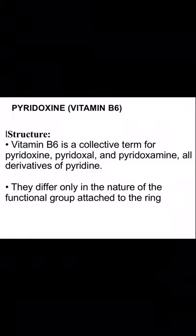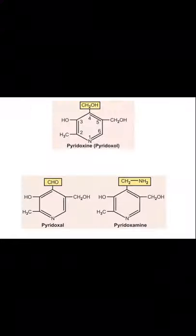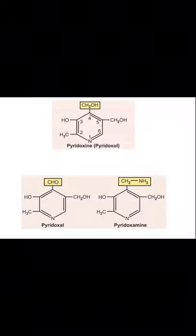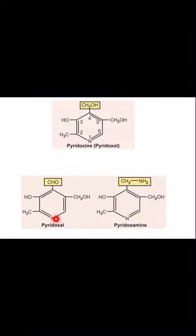They differ only in the nature of the functional group that is attached to the ring. Pyridoxin is the alcohol form, pyridoxal is the aldehyde form, and pyridoxamine is the amine form.